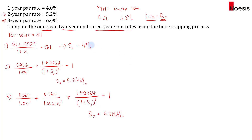So we now have the spot rates for three periods. These spot rates can then be used to discount cash flows occurring in one year, two years, and three years' time.